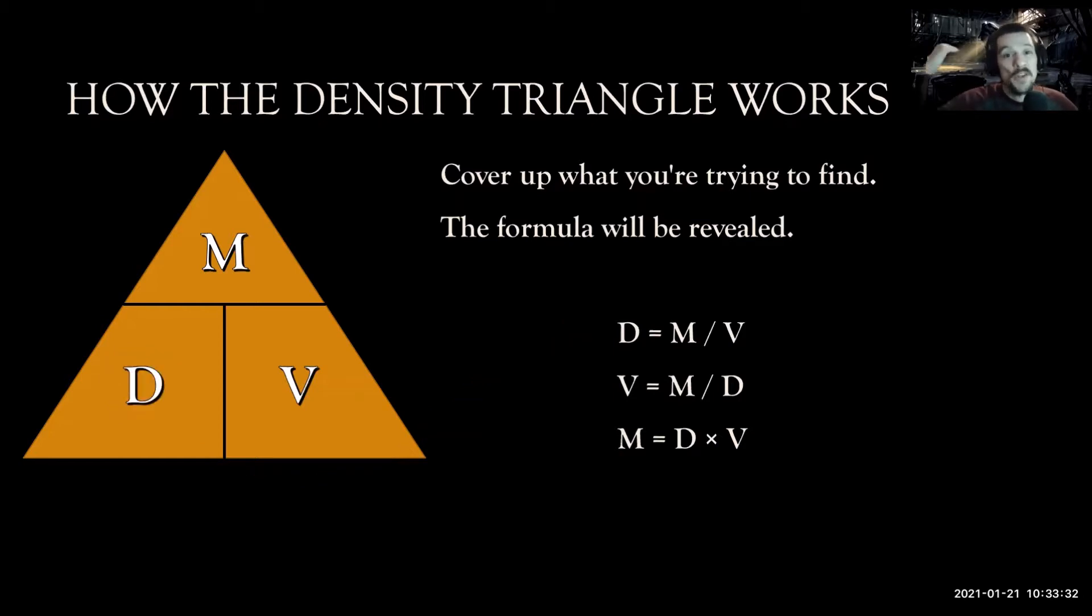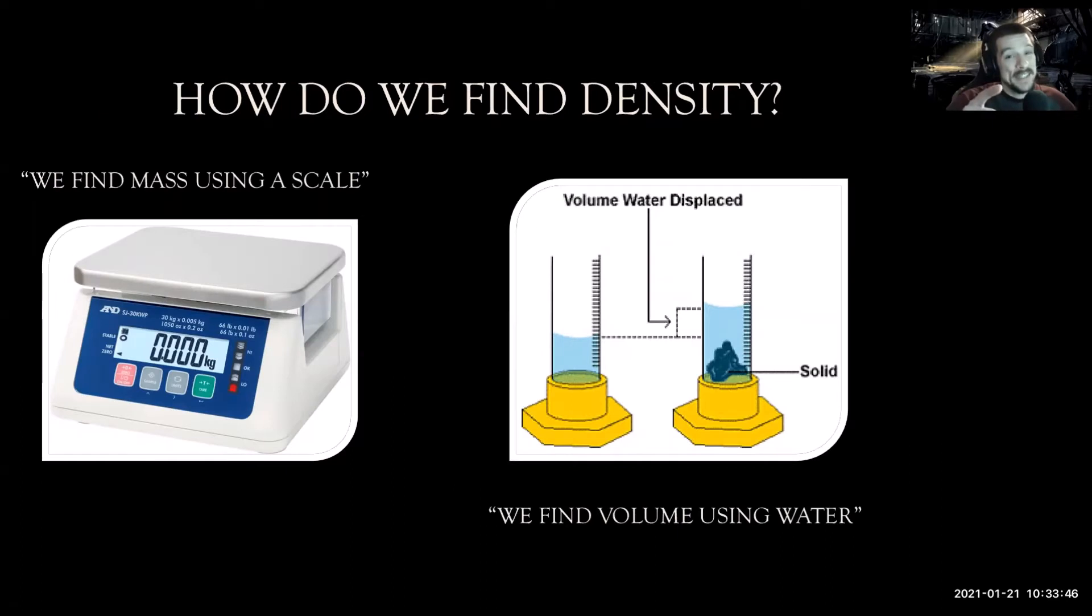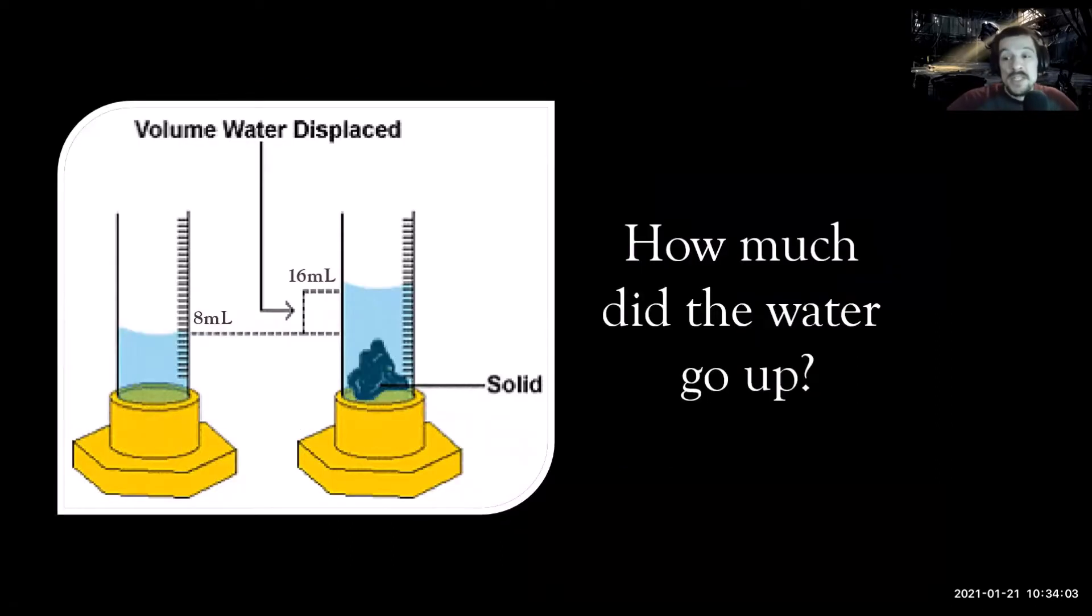This works for all the other formulas as well. Mass will be density times volume, and volume will be mass divided by density. How do we find density? Well, you're going to need a scale and you're going to need a graduated cylinder. The scale is pretty simple: put the object on the scale and whatever the number says, that's your mass. But when it comes to the graduated cylinder, we have to do a little bit of math.